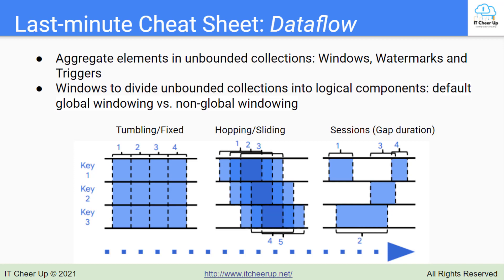With an unbounded dataset, it is impossible to collect all of the elements since new elements are constantly being added and may be infinite through the streaming data. If you are working with unbounded PCollections, then you need to use windowing.